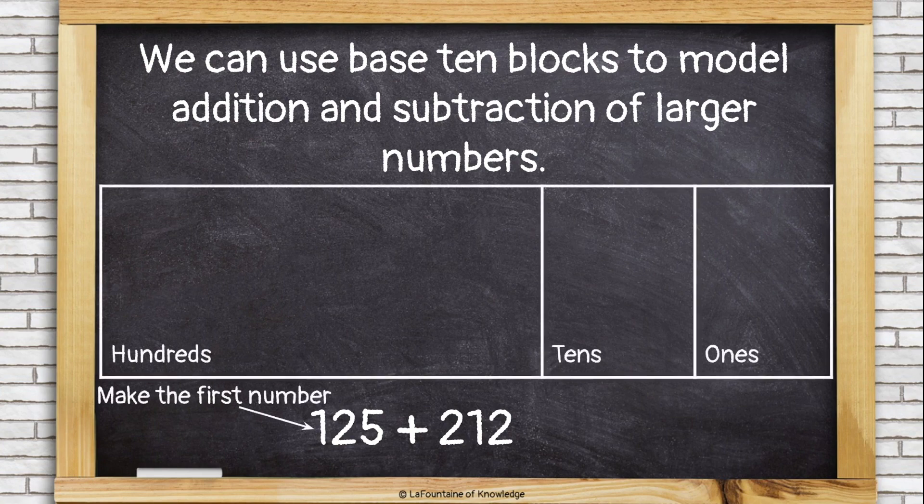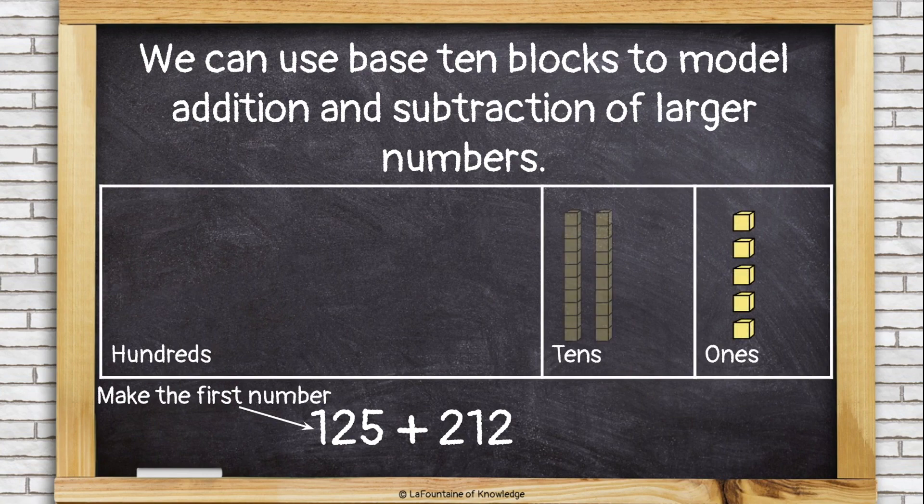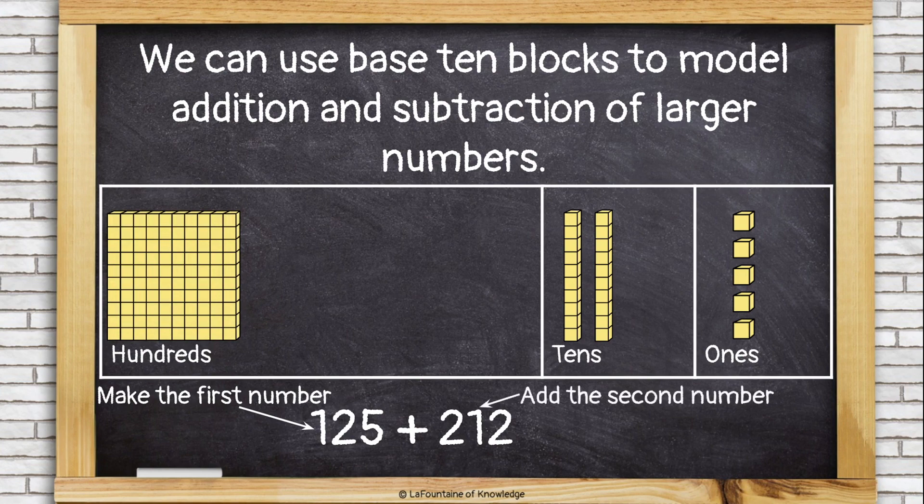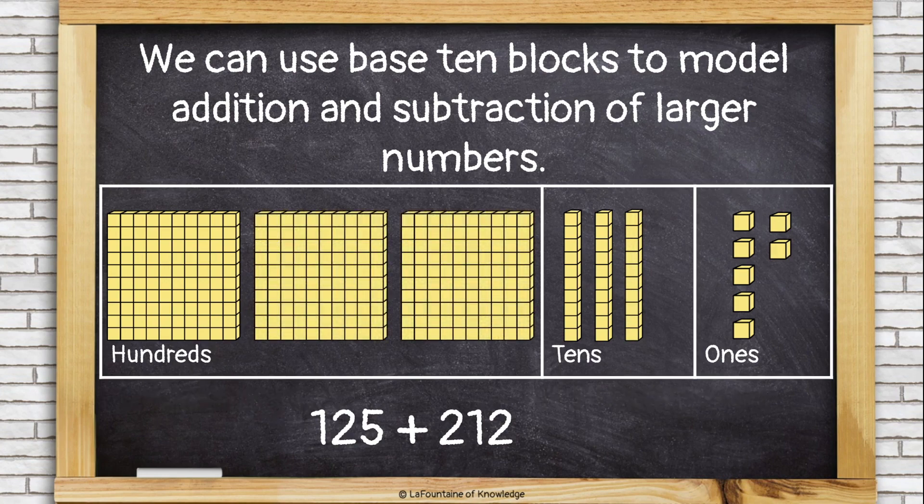First, make the first number. 5 ones, 2 tens, and 1 hundreds block shows the number 125. Next, add the second number to it. So I need 2 more ones, another ten, and 2 more hundreds.